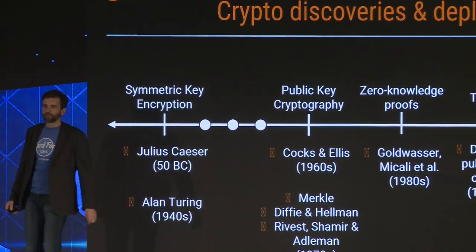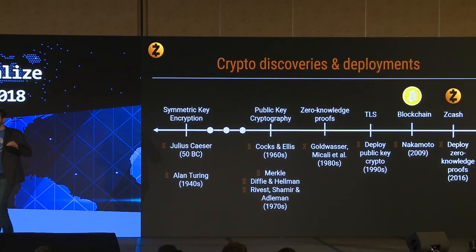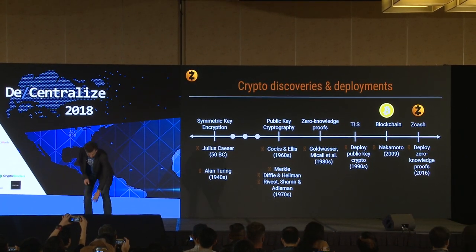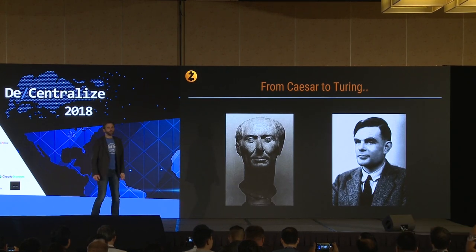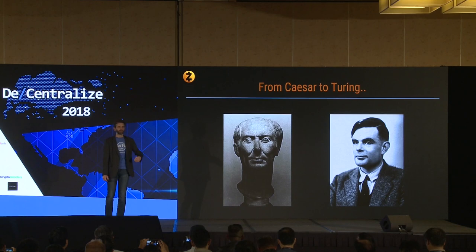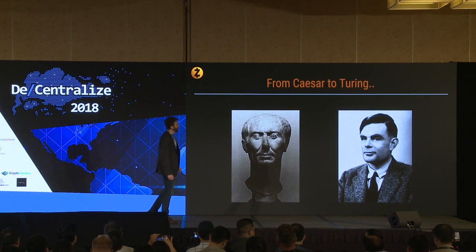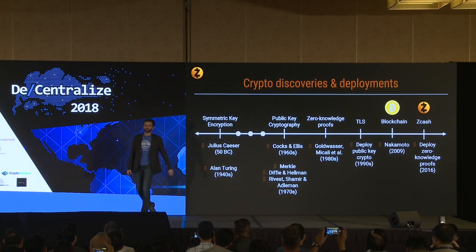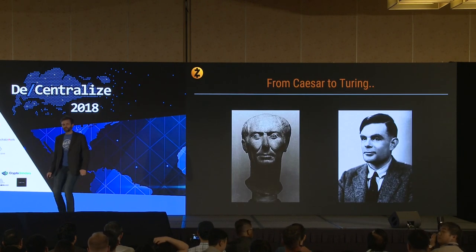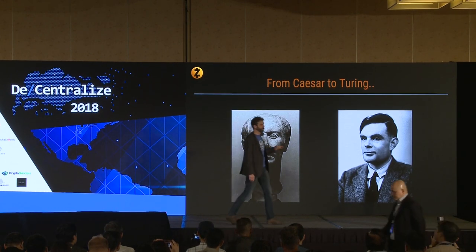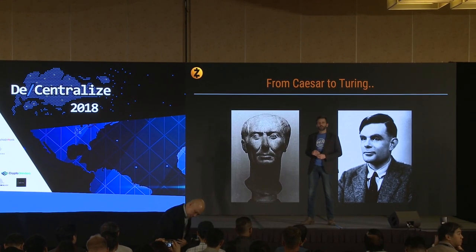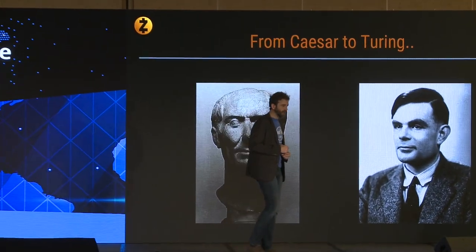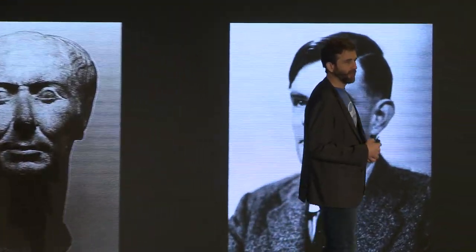In 50 BC, Julius Caesar was using cryptography to protect military messages, so that if the messenger was intercepted, the interceptor wouldn't be able to understand the message — or, critically, replace it with an alternative message to mislead the recipient. Two thousand years later, we were doing the same kind of thing for the same purpose: military messages during the war. Alan Turing, on the right, was essential for cracking cryptography for the Allies during the war, and along the way he discovered scientific truths that laid the foundations for computer science.